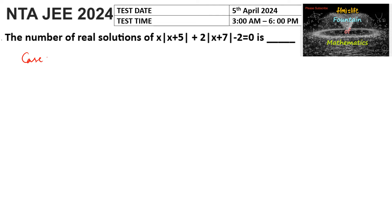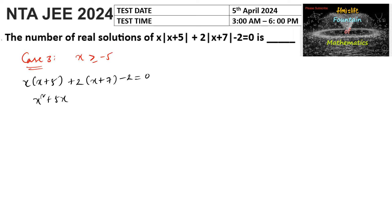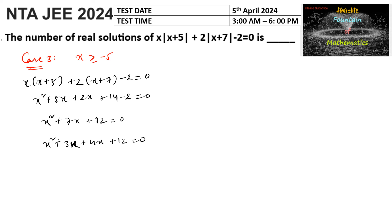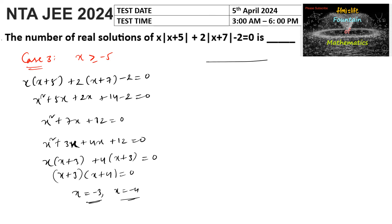Case 3: when x is greater than or equal to negative 5. Both mod of x plus 5 and mod of x plus 7 are positive, so the equation becomes x squared plus 5x plus 2x plus 14 minus 2 equals 0, that is x squared plus 7x plus 12 equals 0. Factoring: x plus 3 times x plus 4 equals 0, giving x equals negative 3 and x equals negative 4.